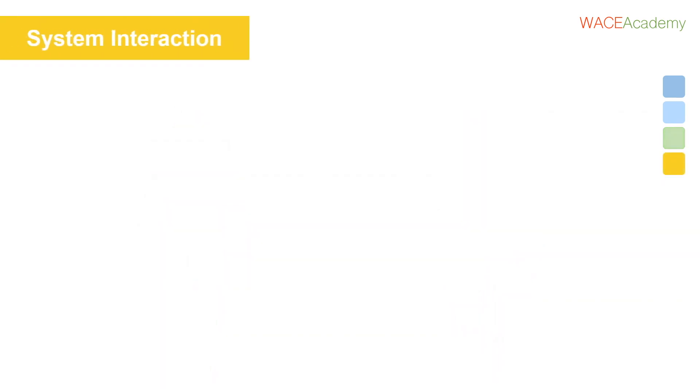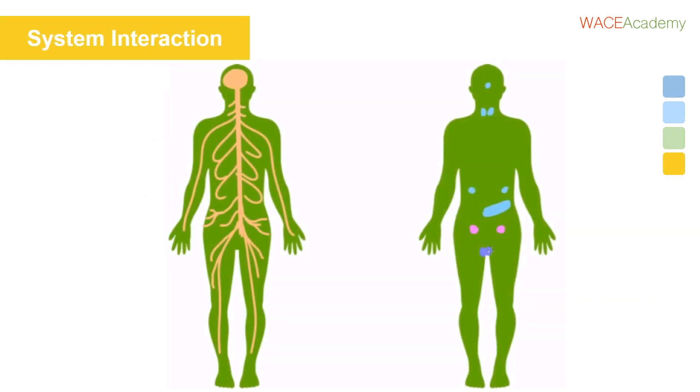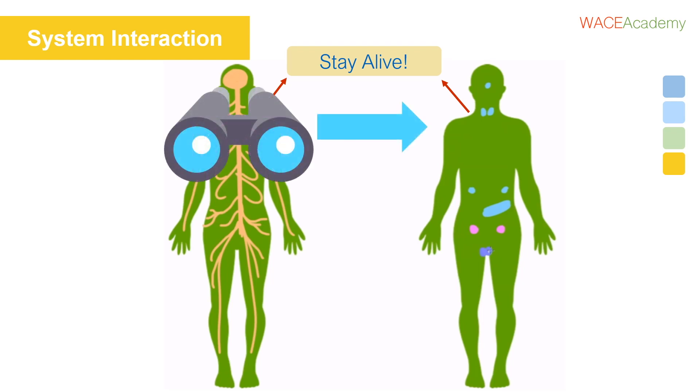Messages from the nervous system and the endocrine system both have the same main goal, which is to keep us alive. The nervous system is responsible for monitoring what's going on outside the body and relaying that information. A lot of the time, it's the nervous system that tells the endocrine system to start its message.